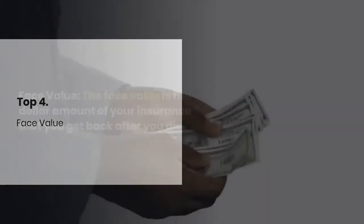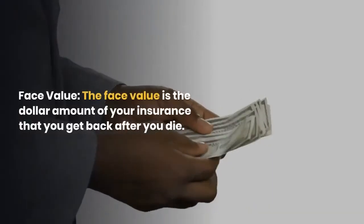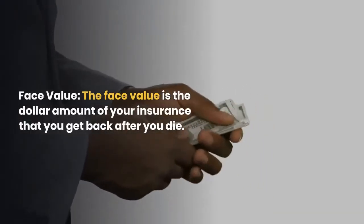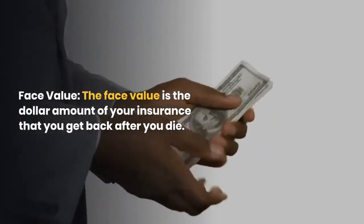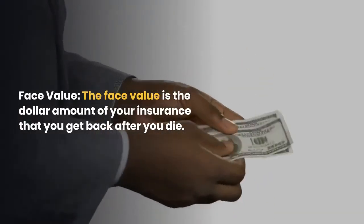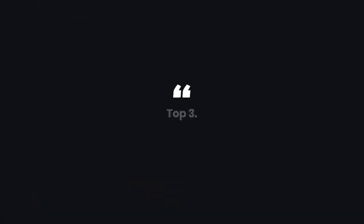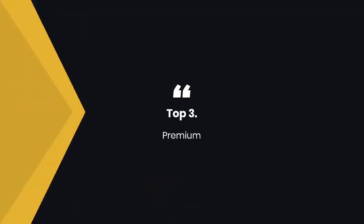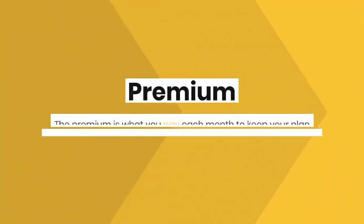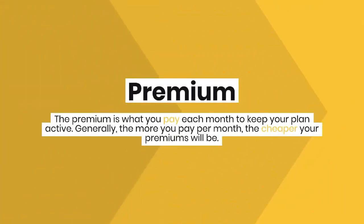Number 4: Face value — the face value is the dollar amount of your insurance that you get back after you die. Number 3: Premium — the premium is what you pay each month to keep your plan active. Generally, the more you pay per month, the cheaper your premiums will be.